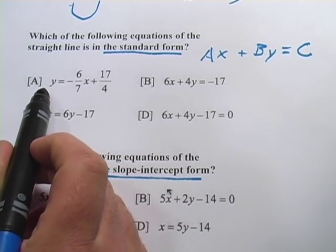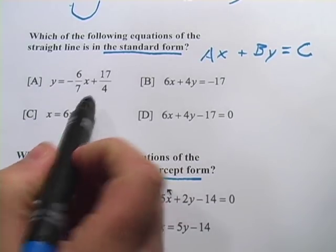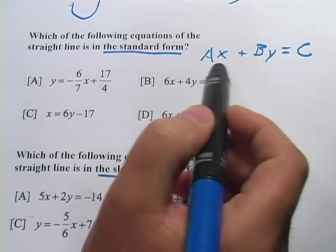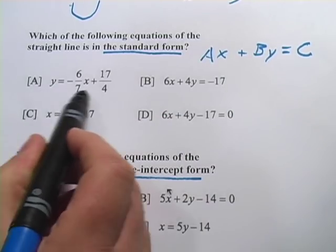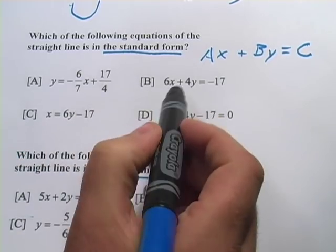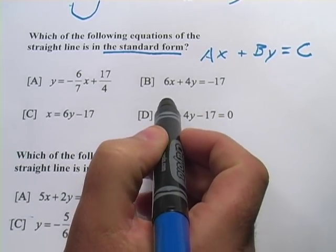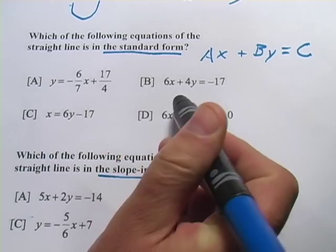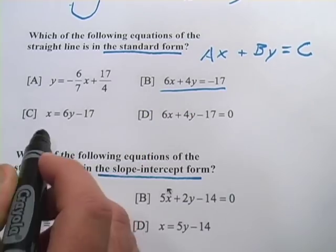This one, we have a y on the left side and everything else on the right side. Well, that doesn't work. We need both the x and y on the left side here. This is actually in that slope-intercept form. B, let's see, it has the x and the y on the left side, the number on the right side. That looks pretty good. Let's look at the others though first.